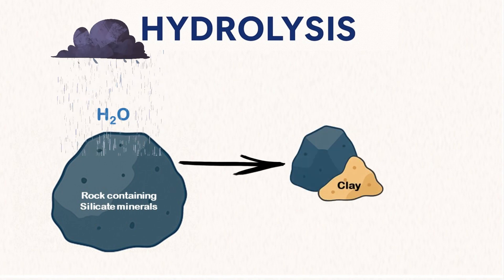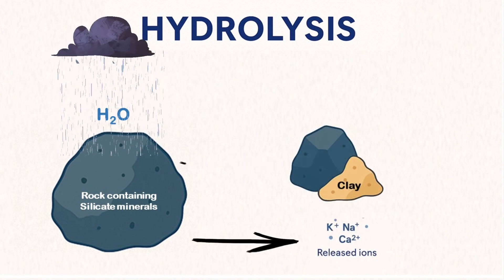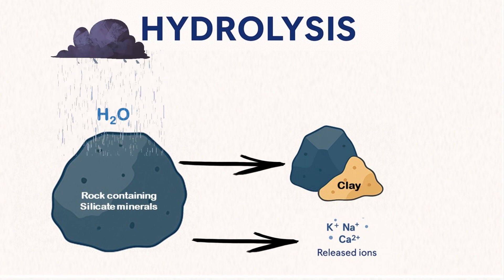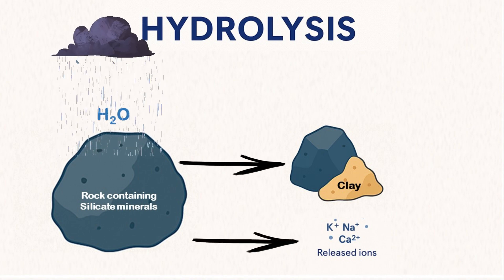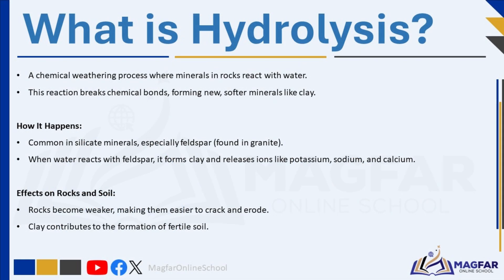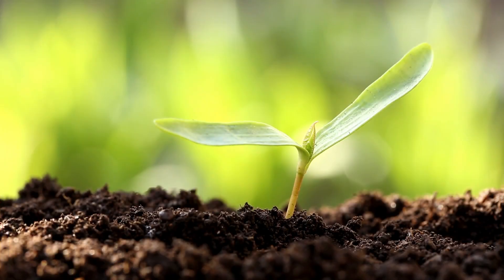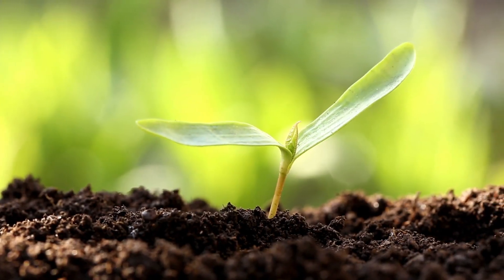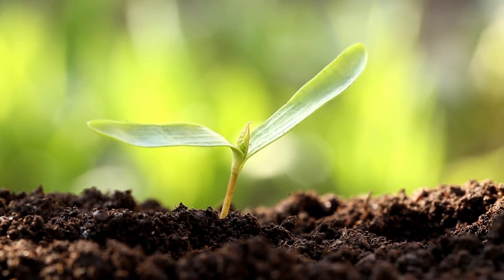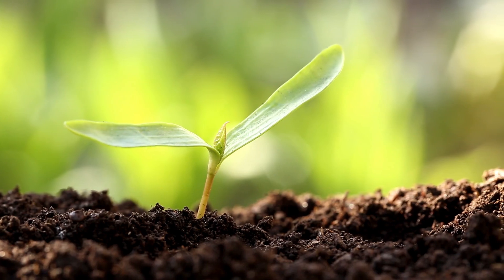At the same time, ions like potassium, sodium, and calcium are released into the surrounding water. This process not only weakens rocks, making them more likely to crack and erode, but it also plays a vital role in the formation of soil. The clay formed through hydrolysis helps create rich, fertile soils that support plant life. The released ions are carried by water into rivers, lakes, and oceans, where they are absorbed and used by plants.